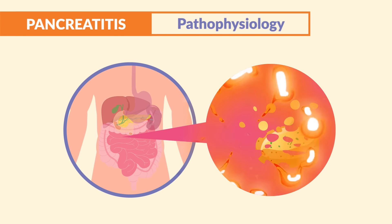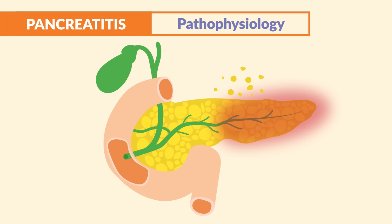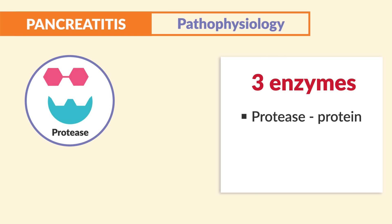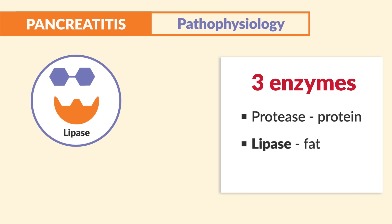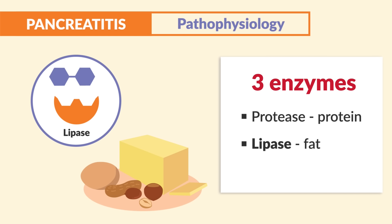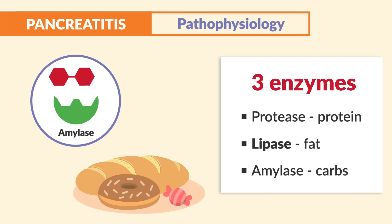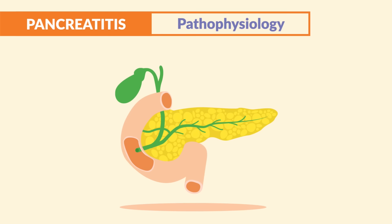The enzymes are the key here — they are like ticking time bombs to break down and digest food. But when they're activated early inside the pancreas, they actually digest the pancreas itself. The three key enzymes to know are protease, which breaks down protein; lipase, which breaks down fats; and amylase, which breaks down carbohydrates.